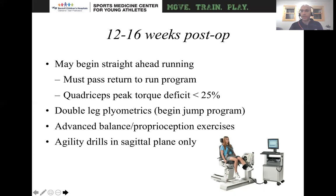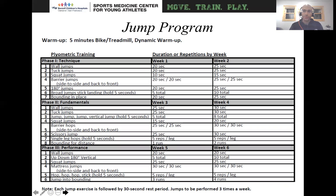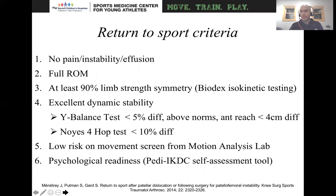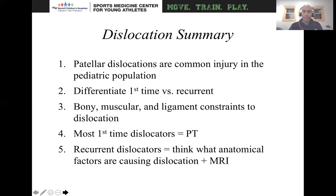Then you begin a jump program and appropriate sport-specific exercises. The jump program is the transition to agility work and return to sport, and it can vary by physical therapy location. From 16 to 24 weeks post-op, you begin return to sport criteria. Typically for me at six months, if you have minimal quadriceps deficit and low risk on whatever movement screening you use, they can safely return. The criteria include: no pain, instability, or effusion; full range of motion; 90% limb strength symmetry; excellent balance; low risk on movement scores; and psychological readiness.